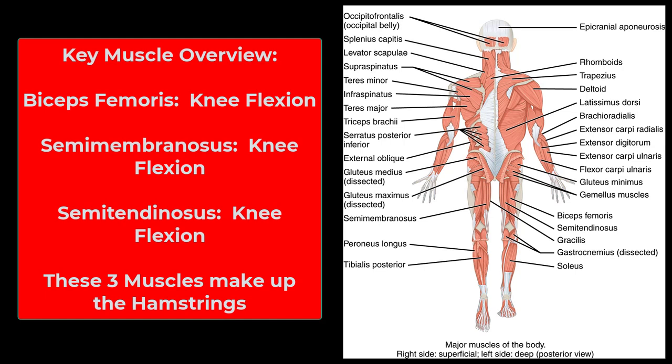Then we have the hamstrings — not one muscle but a group of three: biceps femoris, semimembranosis, and semitendinosus. All three are involved in knee flexion. The biceps femoris has two heads — that's why it's called biceps — in the femoral region. The semitendinosus has a longer tendon visible near the knee, while the semimembranosis has a large membranous sheath-like tendon.